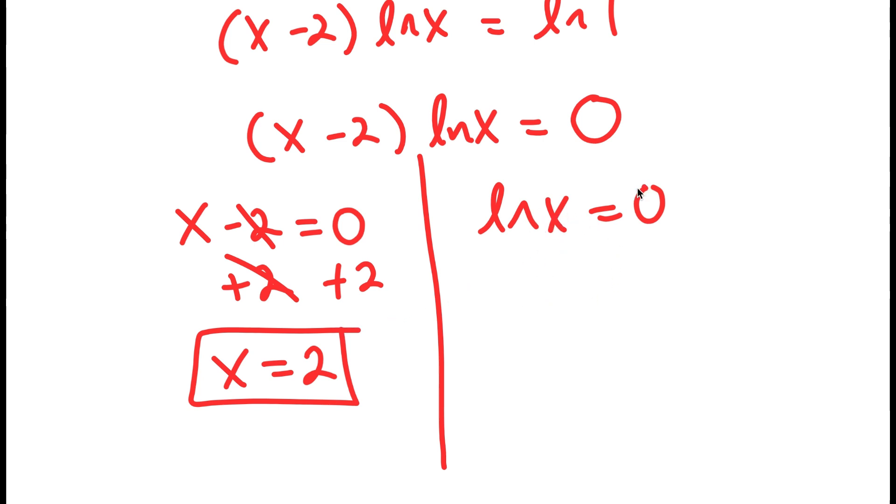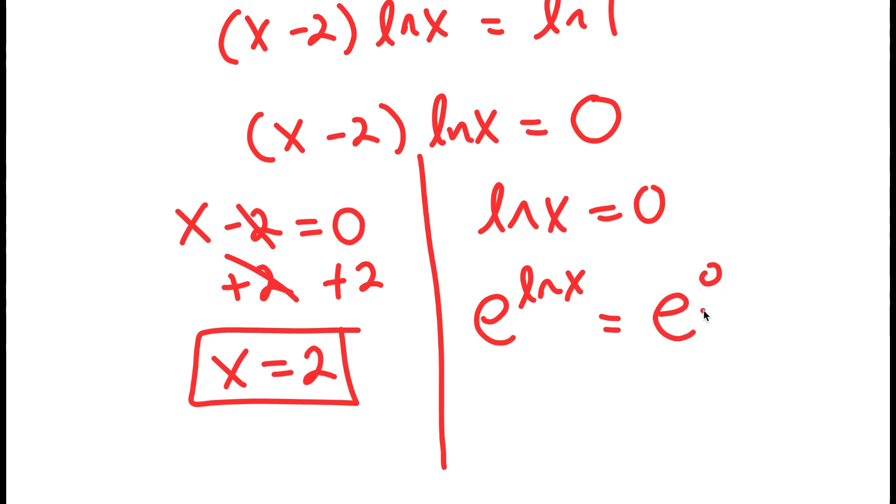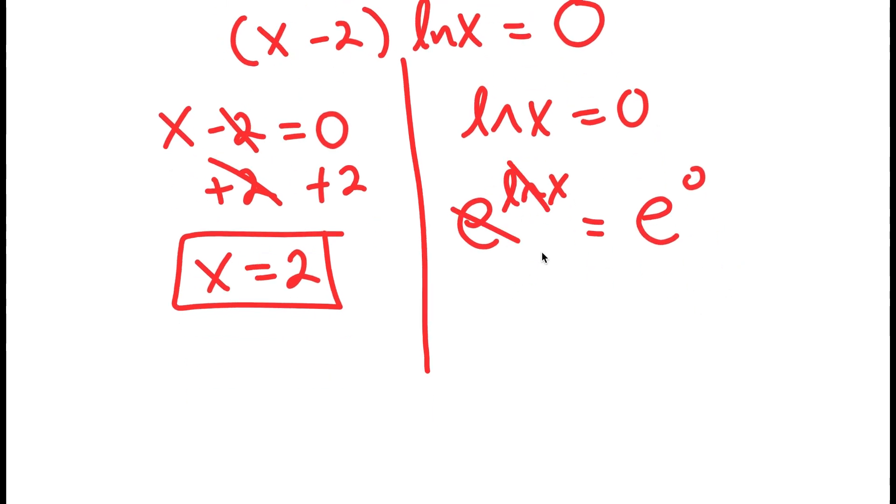And for ln x equals 0, to solve this, I'm going to take e to the power of both sides. So I get e to the power of ln x is equal to e to the power of 0. E and ln cancel out, so I get x is equal to e to the power of 0, which is 1.